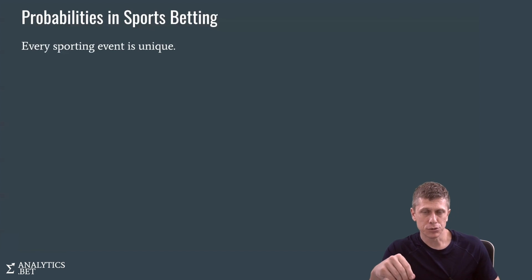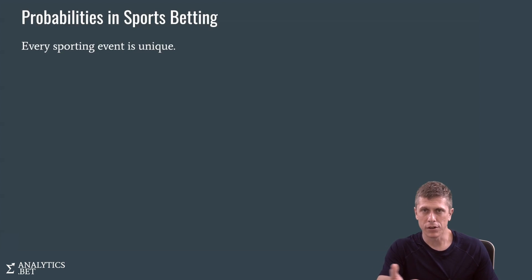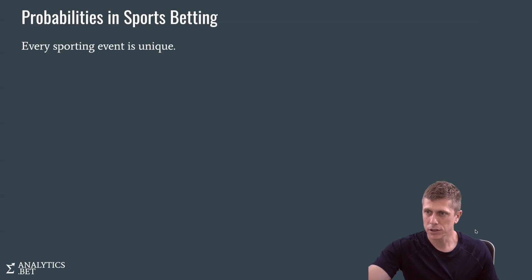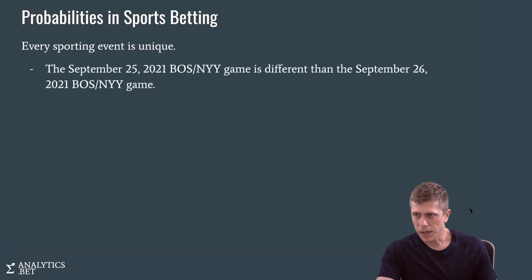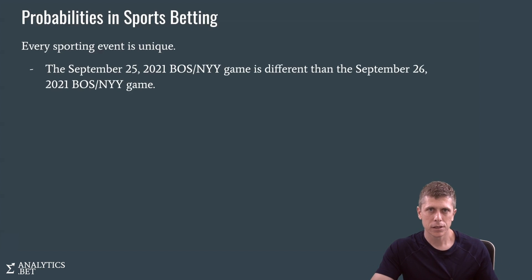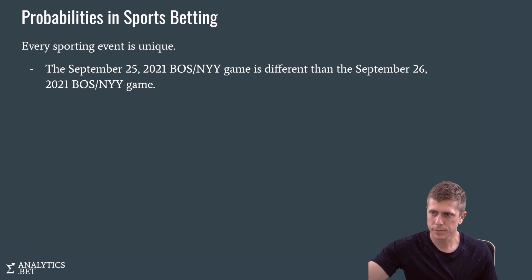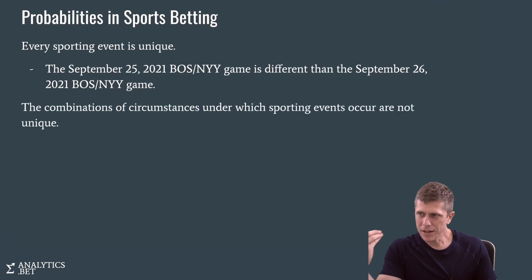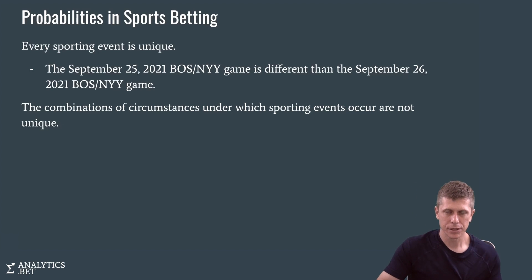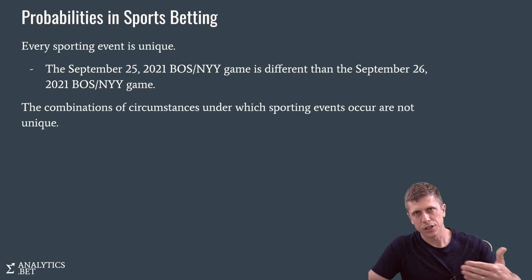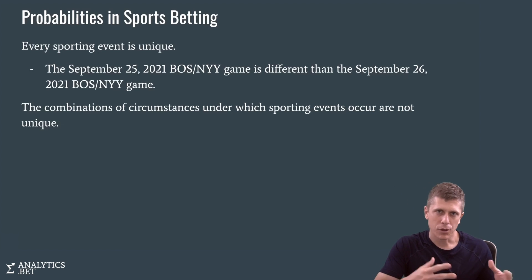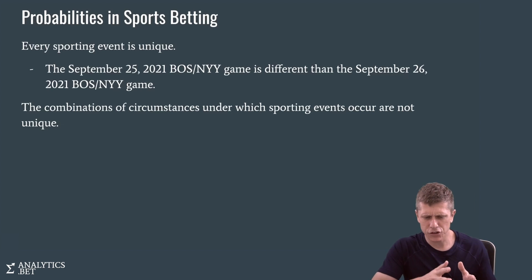Every sporting event is unique and has different tweaks or differences — starting pitchers, weather, head coaches, different strategies. For example, a Red Sox versus Yankees game on September 25th, 2021 is a different game than September 26th, not just because the dates are different, but because the circumstances under which the game was played are different. Even though each game is unique, the combination of circumstances under which sporting events occur are not necessarily unique. That's where the idea of probability starts to come in.